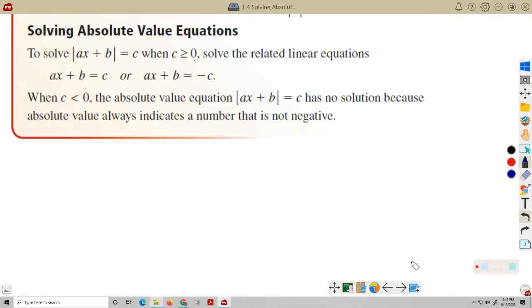So, solving absolute value equations. To solve the absolute value of ax plus b equals c, when c is greater than 0. Why? Because absolute values have to be positive. So, this expression has to be equal to a positive value. We're going to solve the inside for the positive c or negative c.